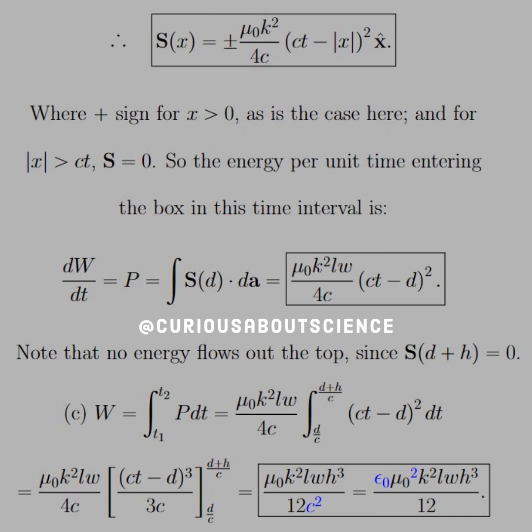So, the energy per unit time entering the box in the time interval is, well, power, of course. We need to have DWDT is equal to P, which we know P is equal to the Poynting vector at D times DA. So, plug it in, and we'll see what we have there in the box: mu K squared LW over 4C times CT minus D squared. Now, note that no energy flows out the top since S of D plus H equals 0.